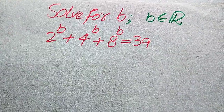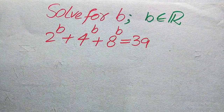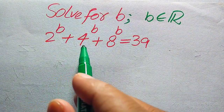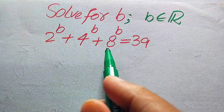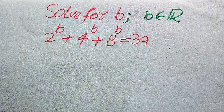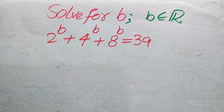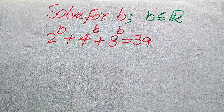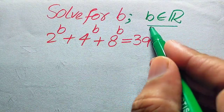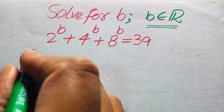Hello everyone. How to solve this problem: for the values of b, if we have 2 to the power of b plus 4 to the power of b plus 8 to the power of b equals 39. We solve this problem for the real values of b, meaning we find the real roots of this equation.